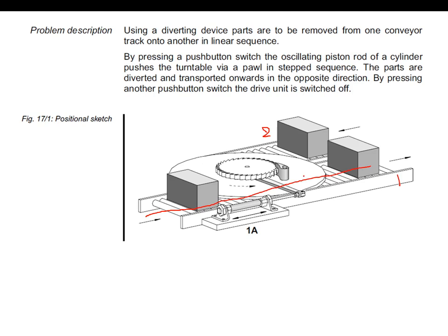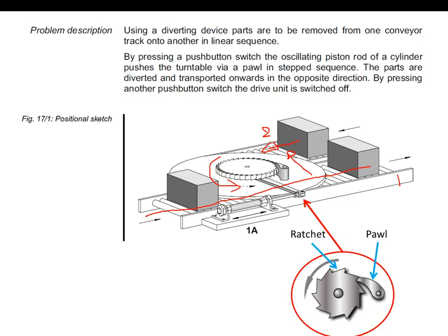However, we can choose to move the part from conveyor belt one to the second one and let it move in the opposite direction. How to do that? By using a turntable connected to a pawl mechanism and actuated by an oscillating piston.